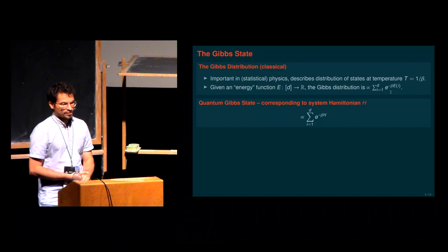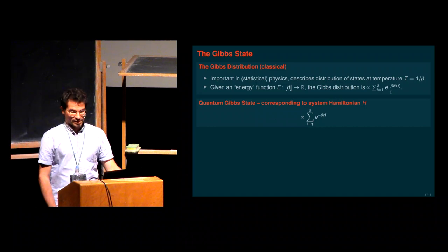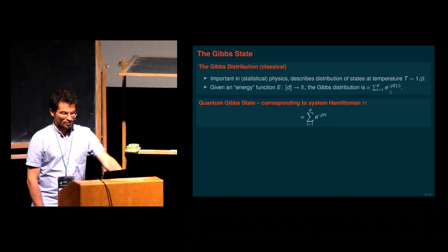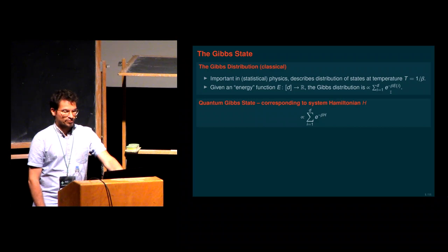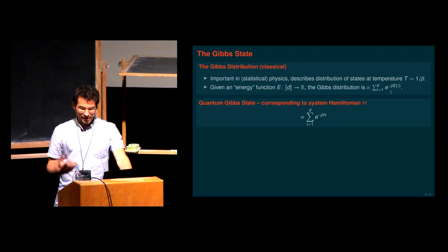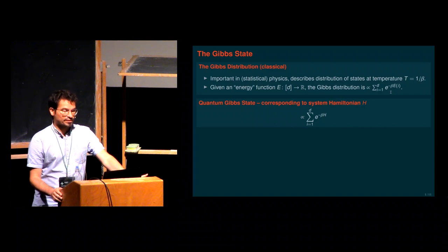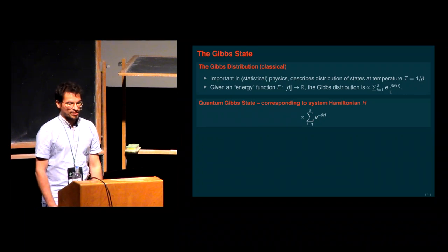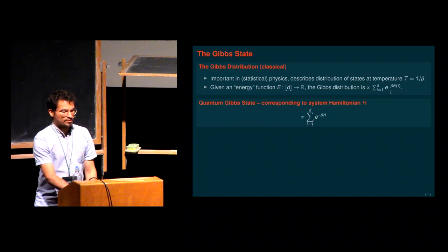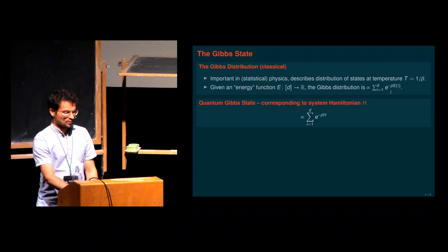The quantum analog is that your state is diagonal in the basis of your Hamiltonian — it is a distribution over energy eigenstates. Formally, you can write it as e to the minus beta of the Hamiltonian. If you diagonalize your Hamiltonian, it's the same as before: an ensemble over eigenstates of the Hamiltonian weighted by energies as described by the Hamiltonian. This is a Gibbs state. In this talk there will be many physics connections, so please interrupt and ask if anything is unclear.